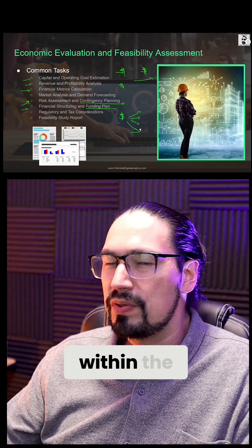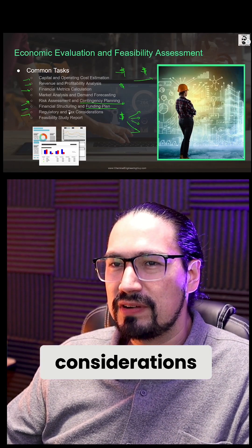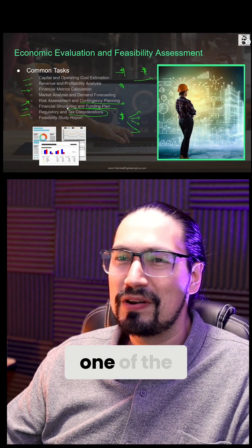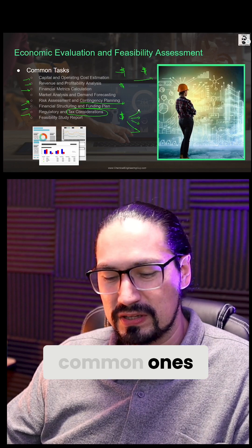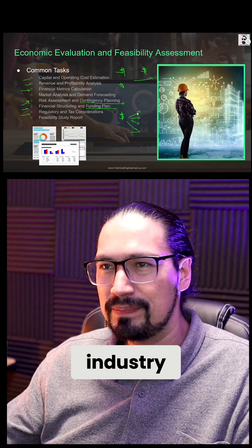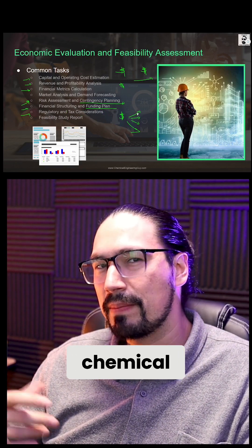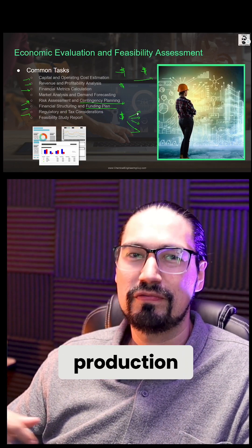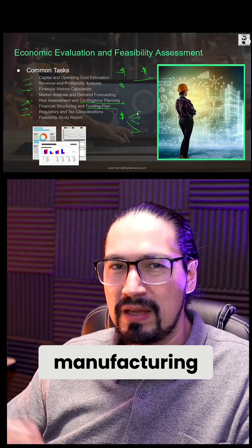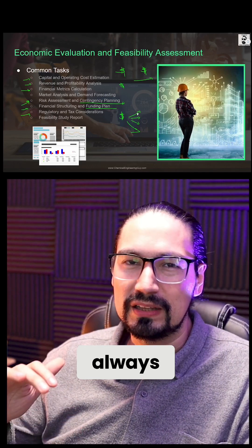Regulatory and tax considerations — this is by far one of the most common ones that you will encounter in the chemical industry. There are plans for chemical production, for manufacturing, and there are always a lot of incentives for companies to make chemical plants.